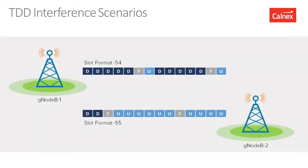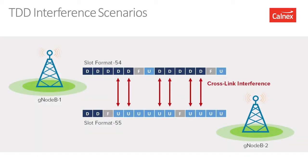One interesting thing about 5G is that there is another source of interference called crosslink interference. This is where two transmissions are happening with frames of slightly different formats. 5G allows for different frame structures or time slot formats to be used, primarily to provide flexibility in how much bandwidth you use — for example, using more time slots for downlink than for uplink. If the frame format differs between adjacent transmissions, they can actually interfere with each other.